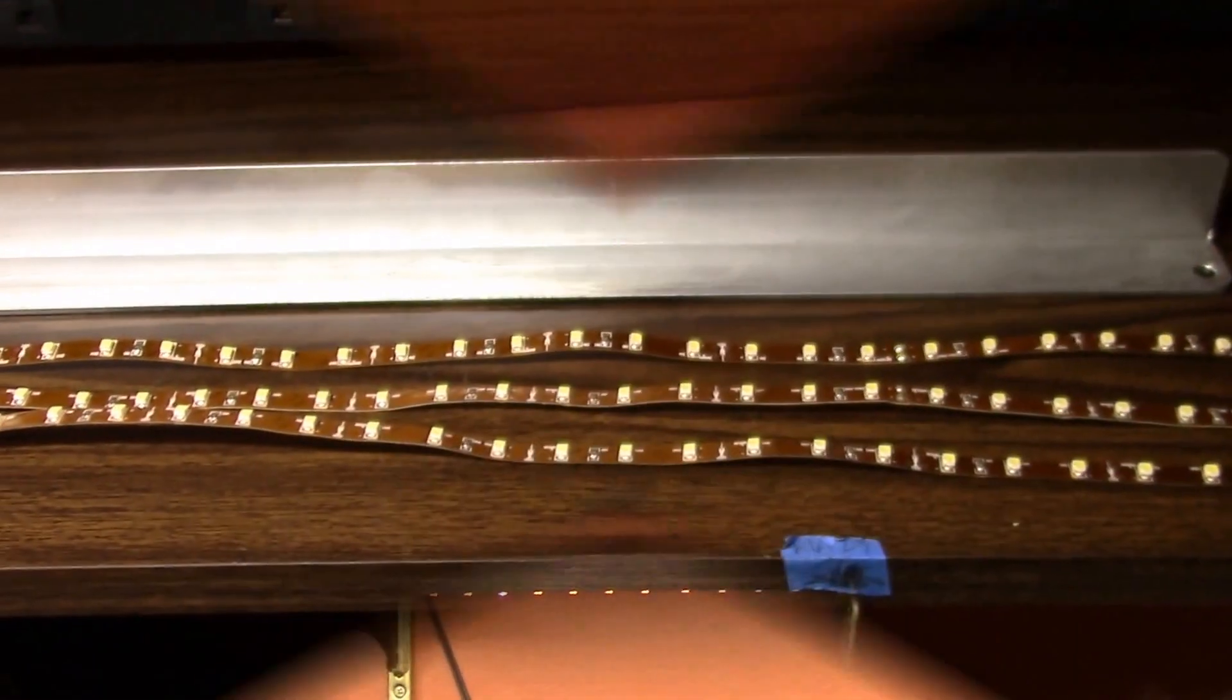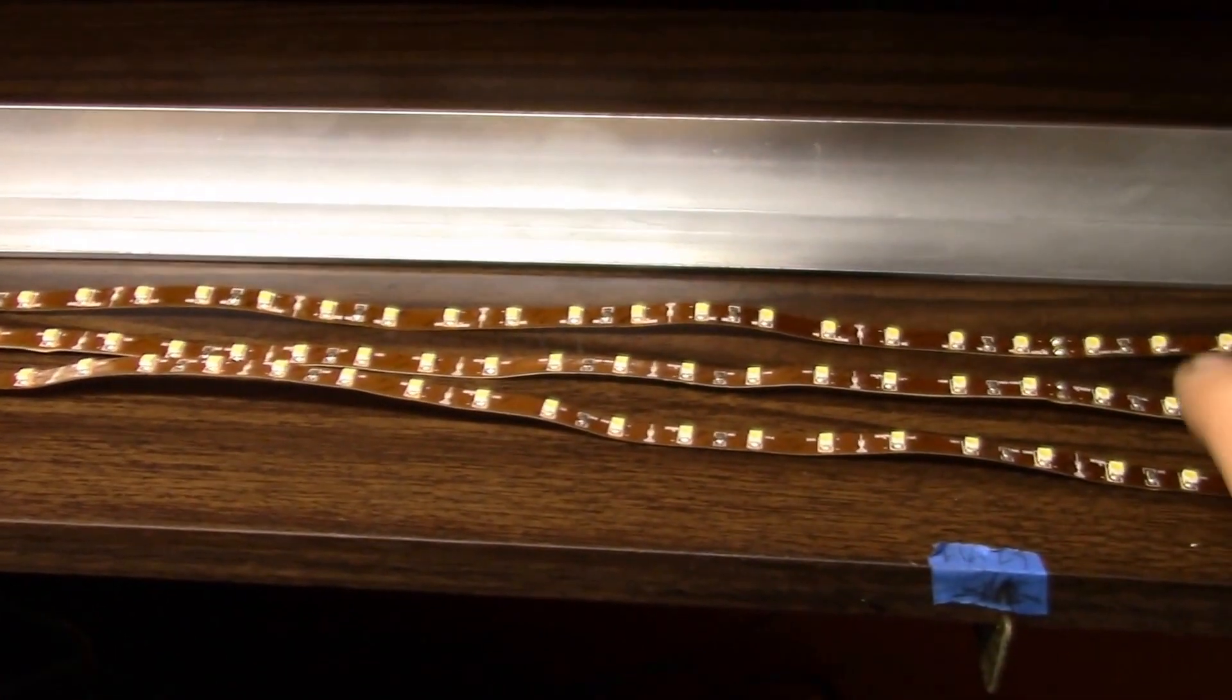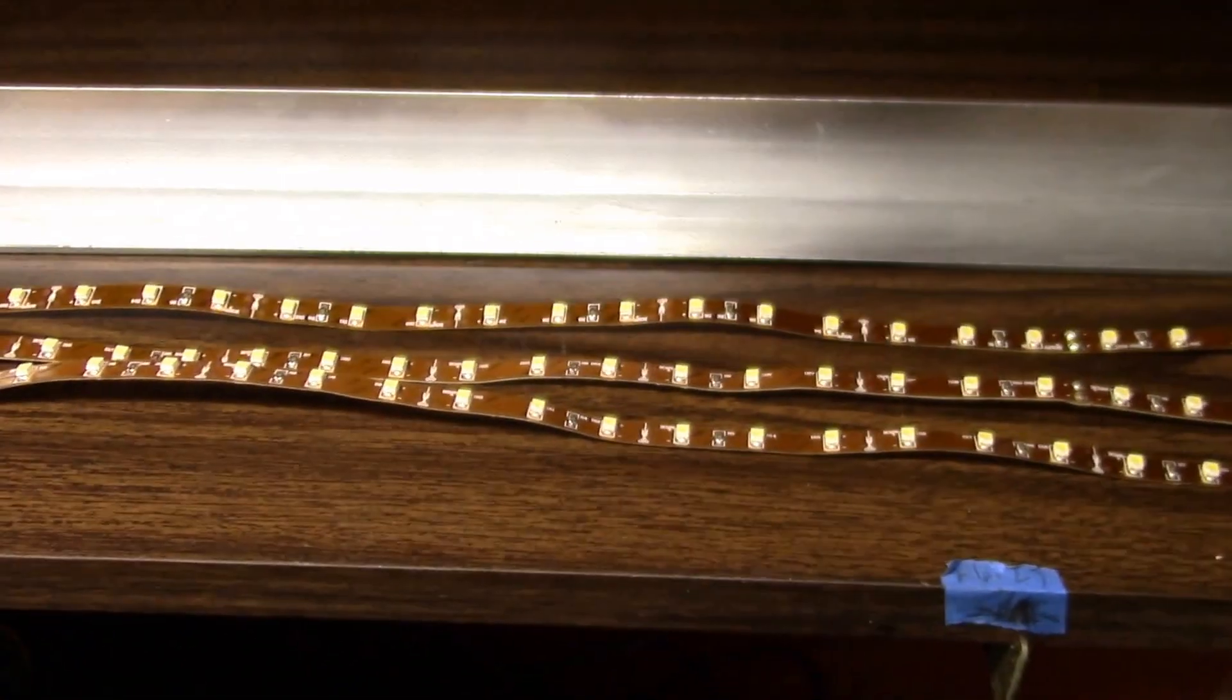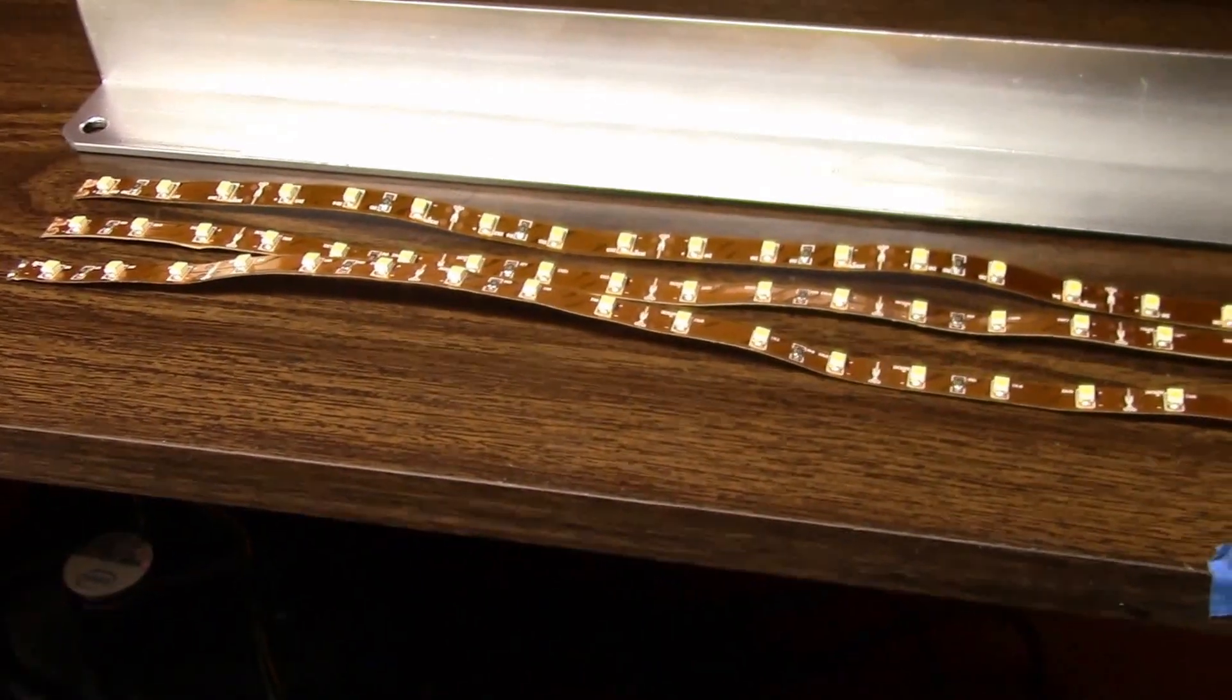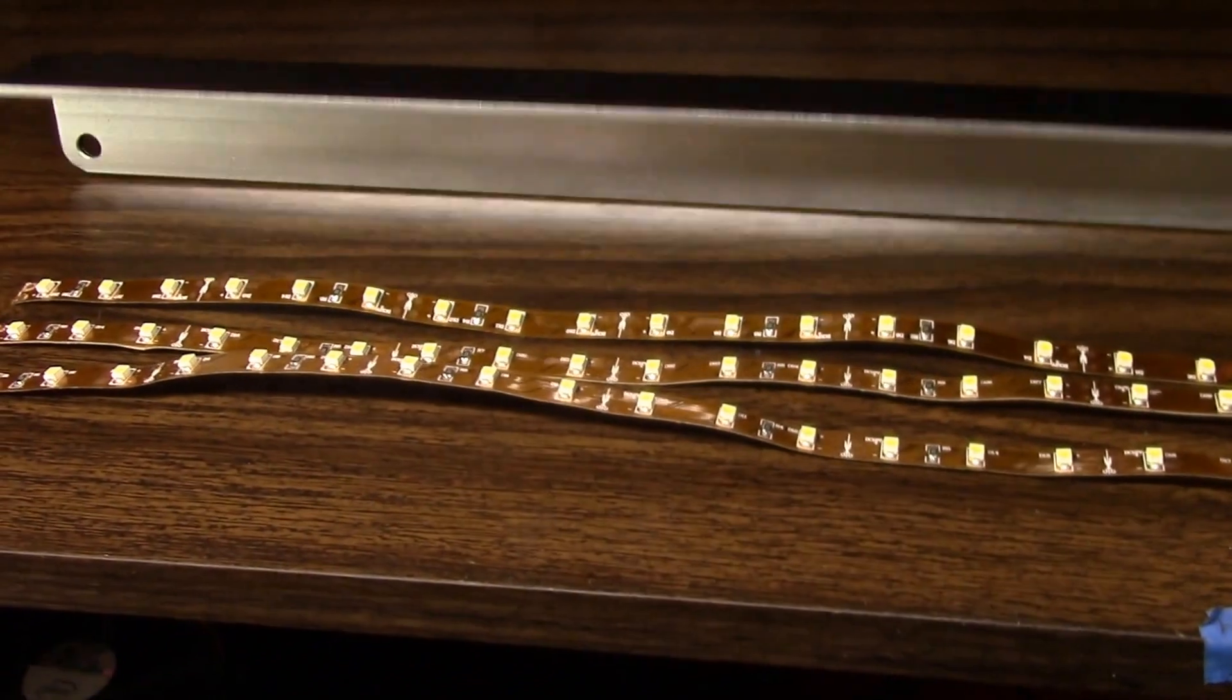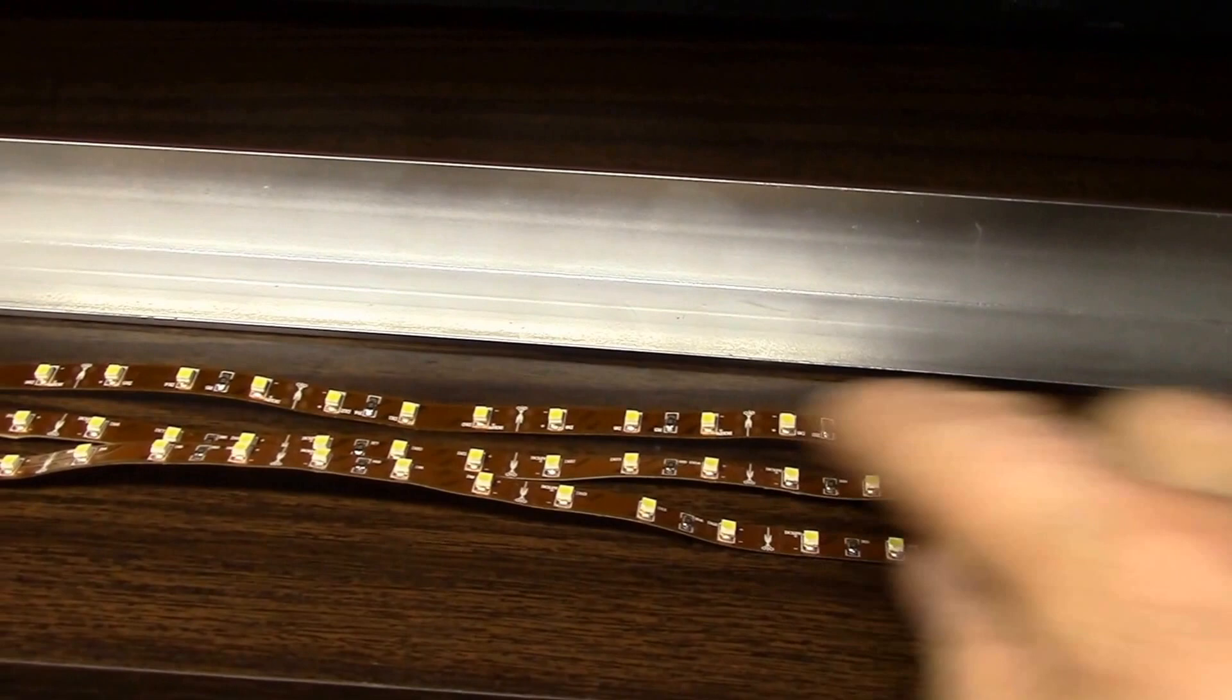Here's my under cabinet lighting fixture that I'm making up. This is three strips of single density LED strip light. My cabinets are about 20 inches wide so I cut a piece of inch and a half PVC angle that I had around. I sprayed the inside with a little silver paint for better reflection and then the outside is painted black. So I have the three strips of lights.